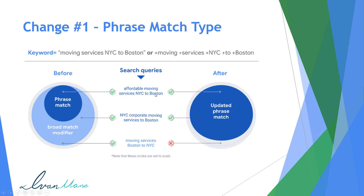So if someone types in 'affordable moving services NYC to Boston,' right now the ads will show up if you have this phrase match type, because all these words are in the search term and it has an extra word at the beginning, which is okay. Now, if someone types in 'NYC corporate moving services to Boston,' your ad would not show up for the phrase match type, because in this case all the words needed to show the ad are in there, but they're not in that order. So under the phrase match type, your ad will not show up for this search query. It will, however, for the broad match modifier, because the words are there.